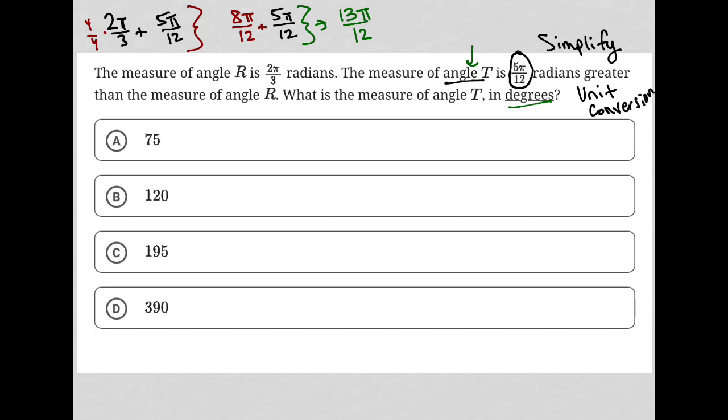The way we convert from radians to degrees is through this conversion factor: π radians equals 180 degrees. So 13π/12 radians.